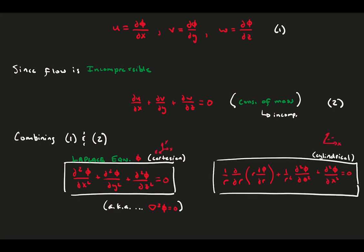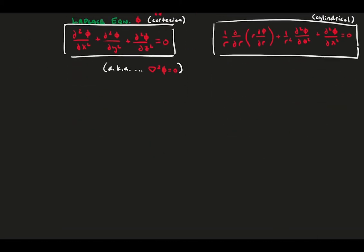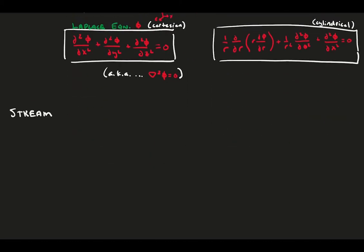Next, we consider the stream function, which by definition is the velocity set equal to the opposite spatial derivative of a scalar function. Now, we want to also consider the meaning of the irrotational assumption, which is that our vorticity is set to zero.